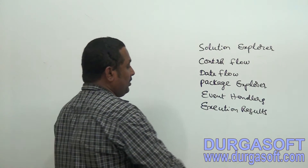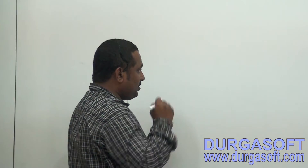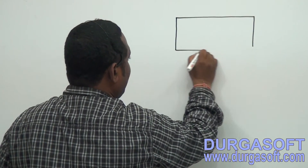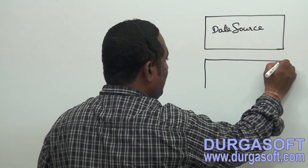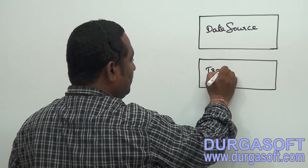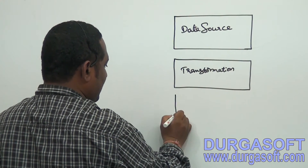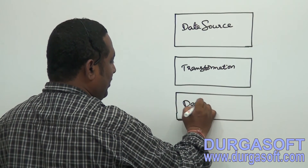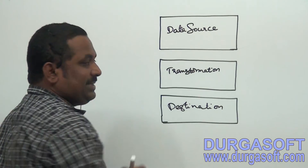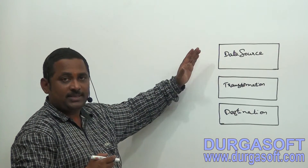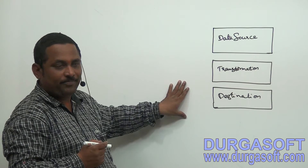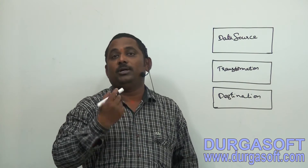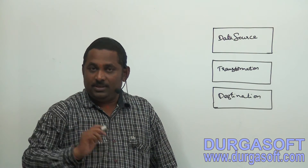What is the basic structure of an SSIS package? Generally the package structure will be: first a data source, then a transformation, then a data destination. Sometimes we work with multiple data sources, multiple transformations, and multiple destinations. Also, without transformation we can create a package — only source and destination — depending on the requirement.